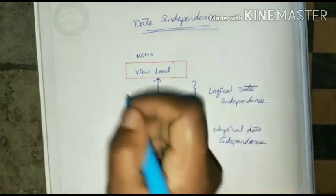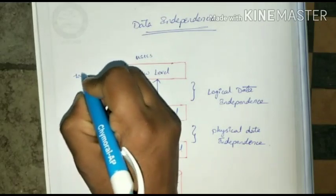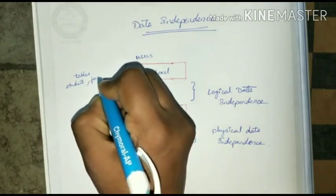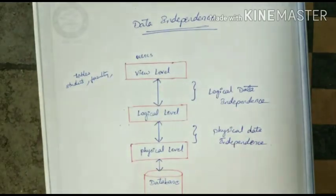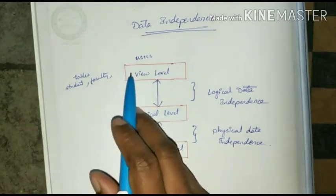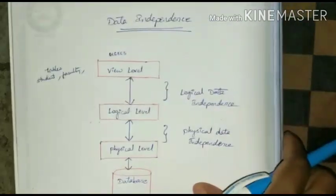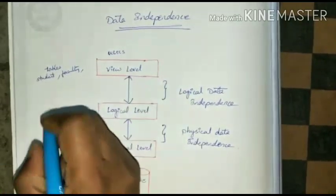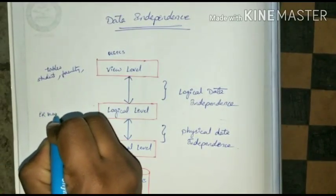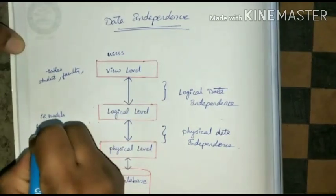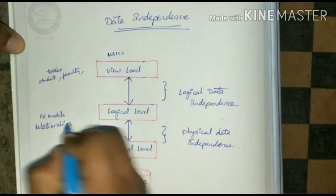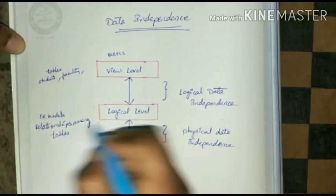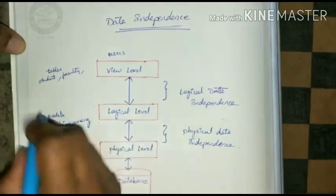At the logical level, different table structures are stored — different tables like a student table, faculty table. Each different user like a student, faculty, or principal can see different tables displayed. The logical level is a combination of all the tables, combining all the views, like ER models and tables, showing the relationships among the tables.